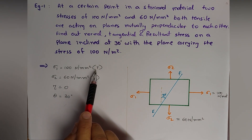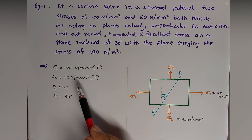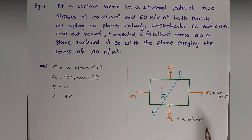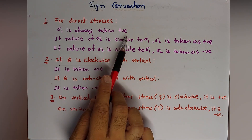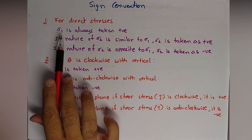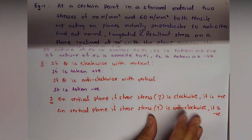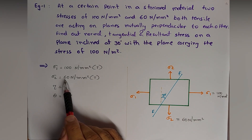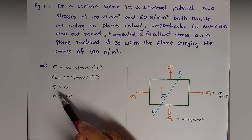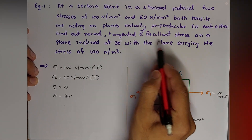Now we write the data: σ₁ = 100 N/mm² (tensile, positive) and σ₂ = 60 N/mm² (tensile, also positive). As per sign convention, σ₁ is always positive, and since σ₂ has the same nature as σ₁ — both tensile — σ₂ is also taken as positive: +60 N/mm². Shear stress τ = 0 (not given), and θ = 30°.